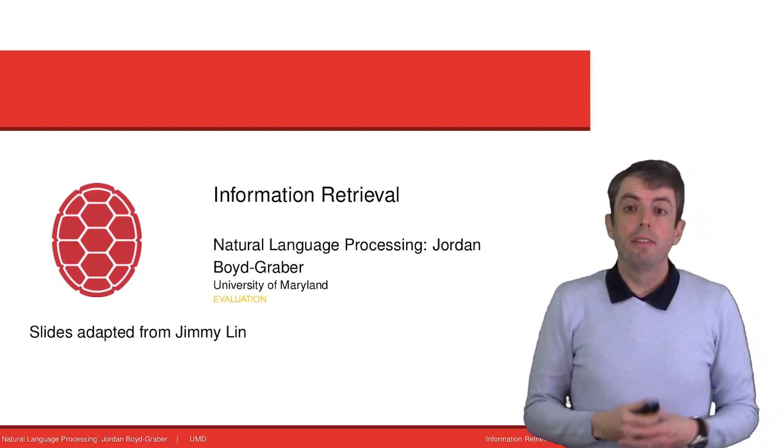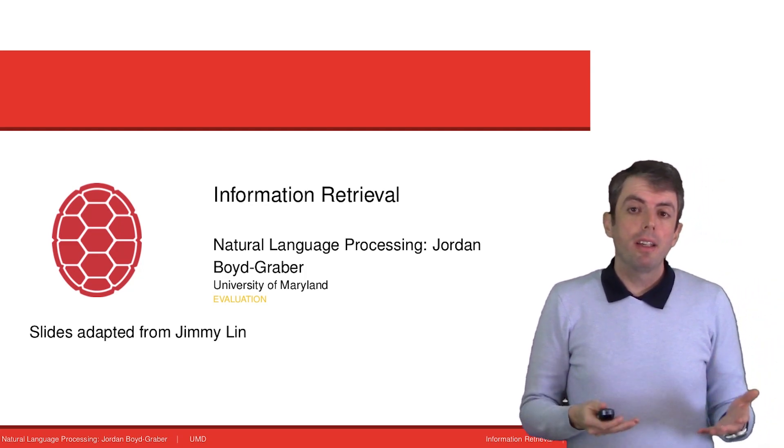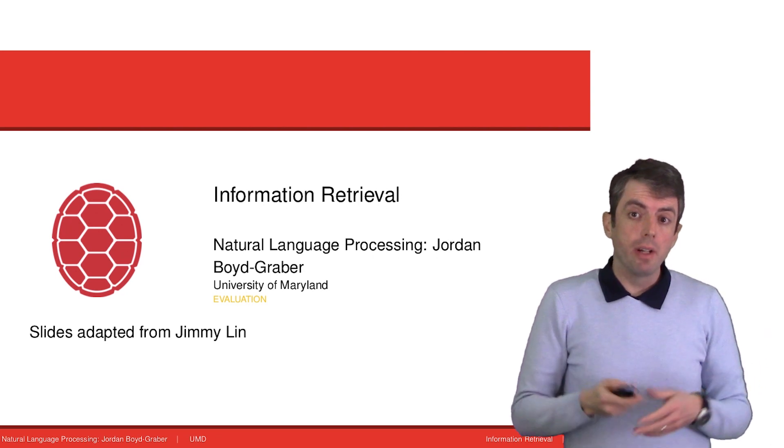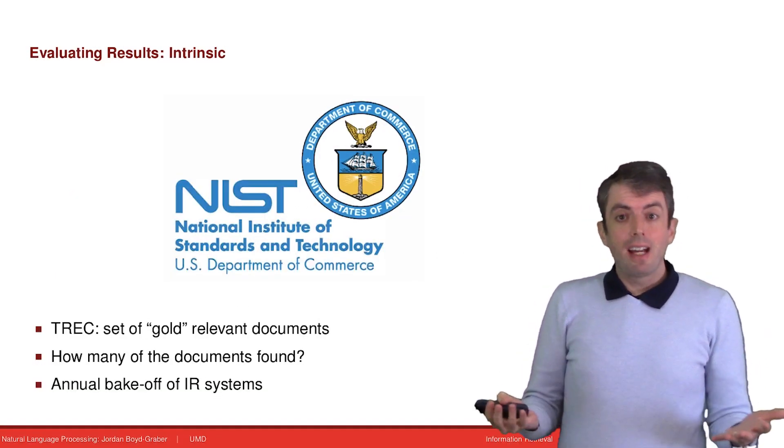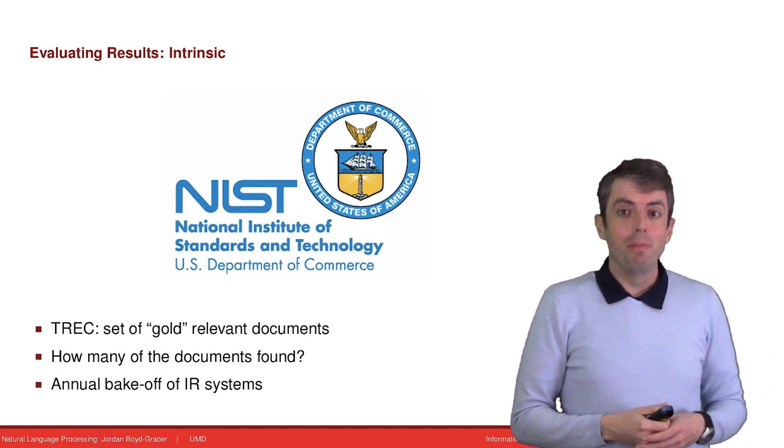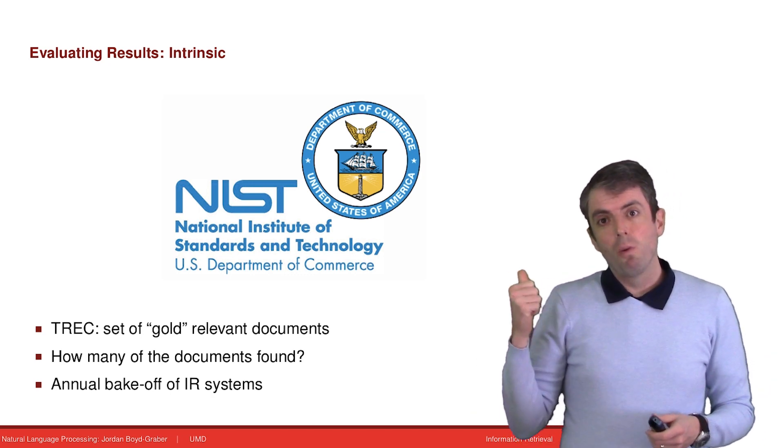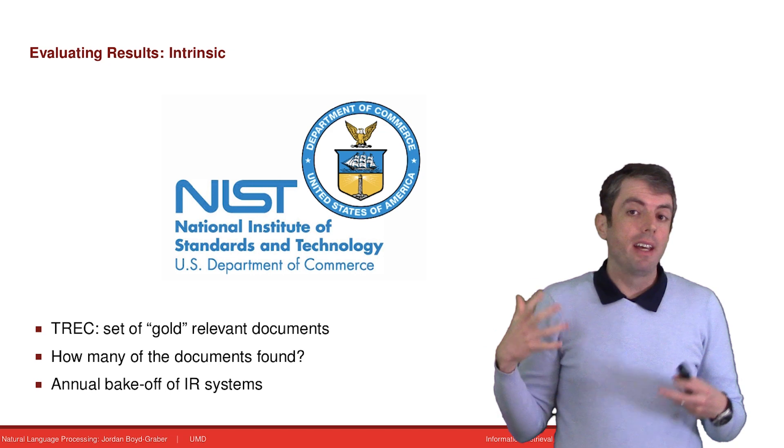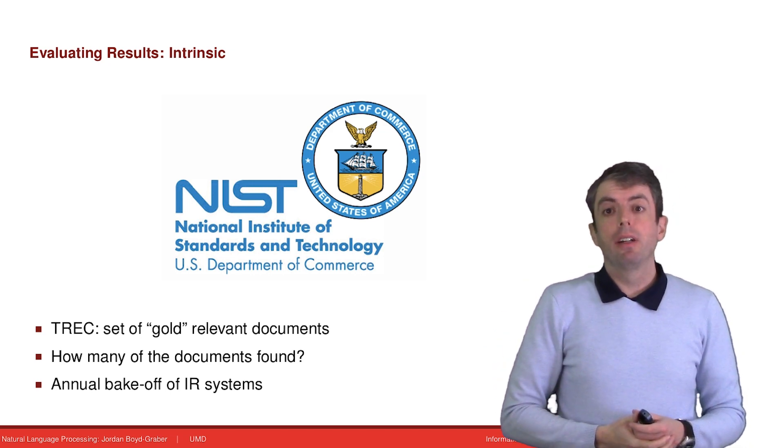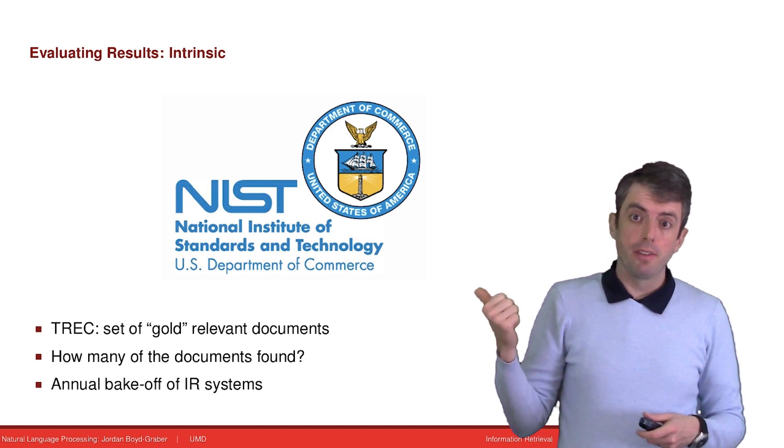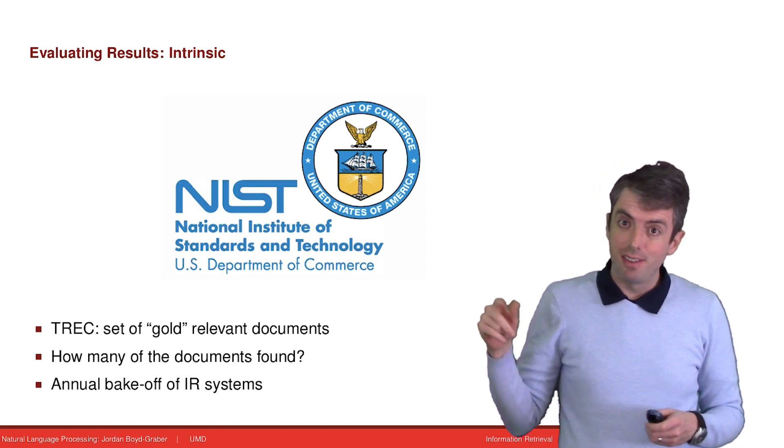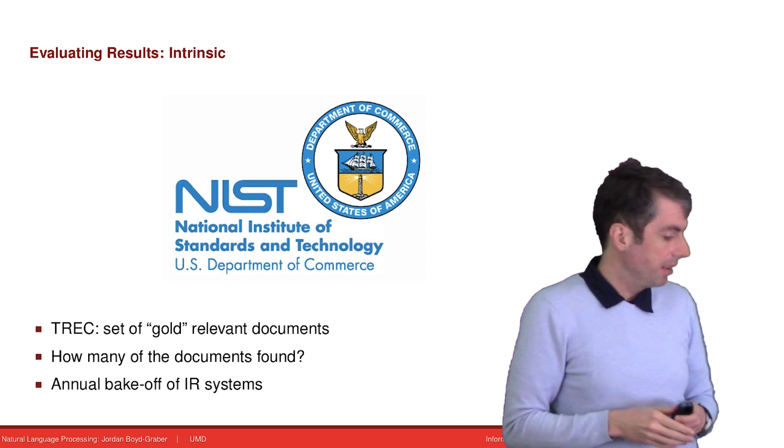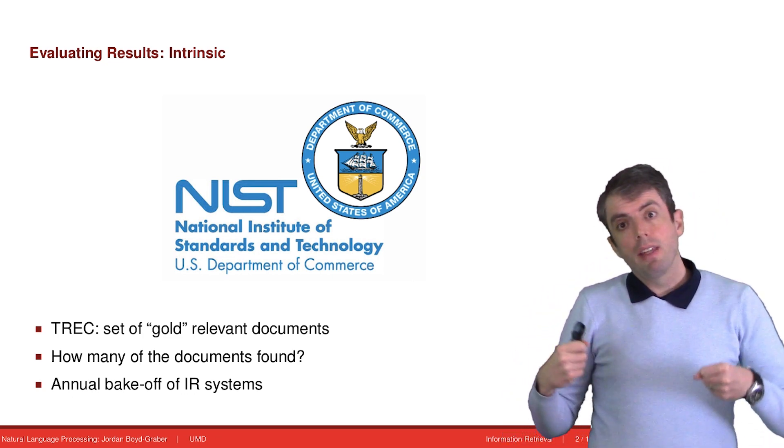We're going to conclude our discussion of information retrieval by talking about how you actually evaluate an information retrieval system. This actually has a connection to Maryland. The organization that really pioneered the evaluation of information retrieval systems is the National Institute for Standards and Technologies in Gaithersburg, Maryland, just along the beltway a little bit.